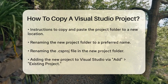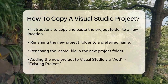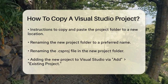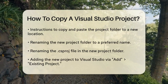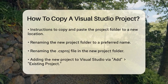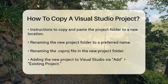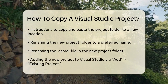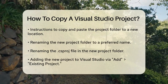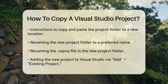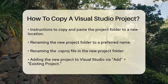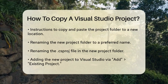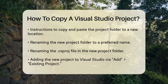Next, you need to rename the .csproj file inside the new project folder to match the new project name. After renaming, go back to Visual Studio, right-click on your solution, and select 'Add Existing Project.' Navigate to your new project folder and add the project.